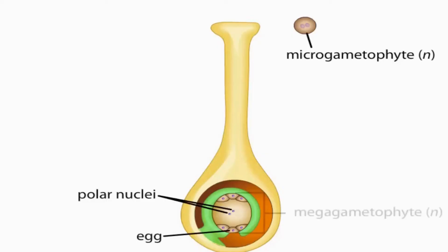Another cell is the egg. The seven-celled structure makes up the female gametophyte called the megagametophyte.